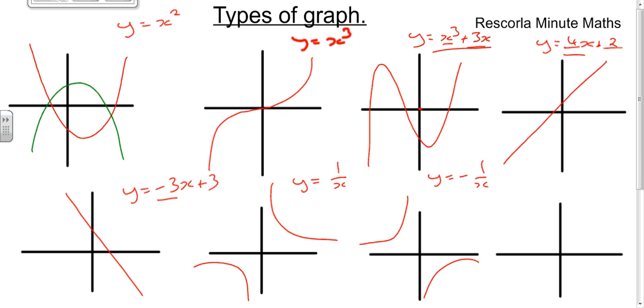Finally, if it says y equals, say, 3 to the power of x, what happens is it starts off like that and it slopes up like that. If it was y equals 3 to the power of minus x, it would go the other way. So it would go this way and up like that.